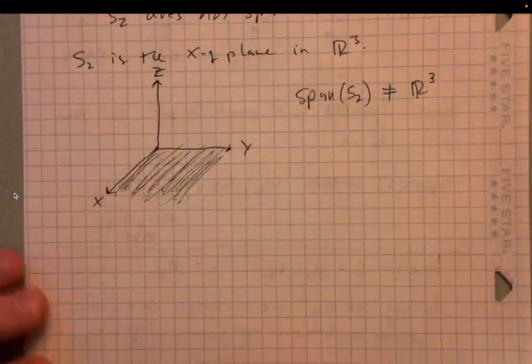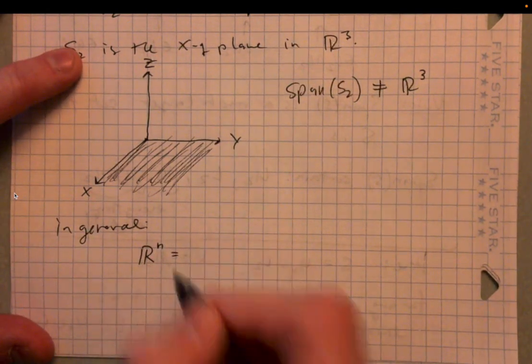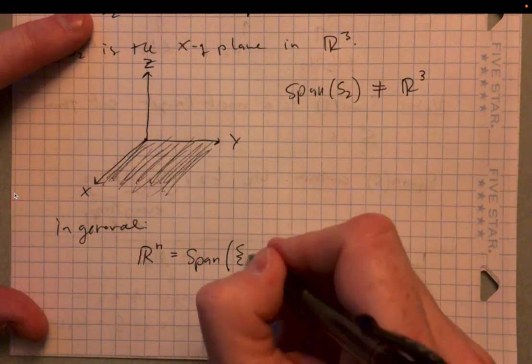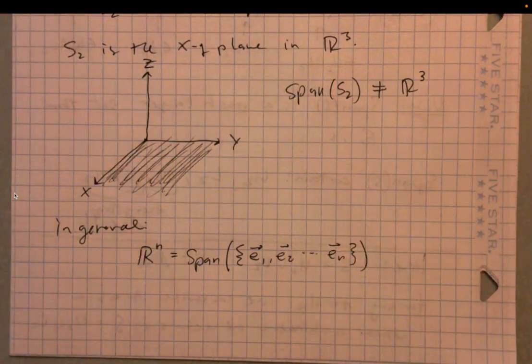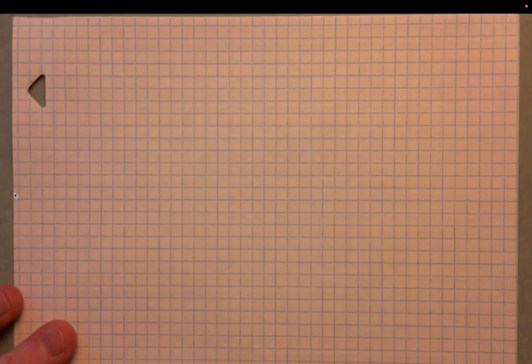In general, Rn is going to be equal to the span of N standard basis vectors E1, E2, ..., En. If I take these N vectors, the span of those N vectors is naturally going to equal Rn. We just saw two examples of that. So we've defined span and looked at examples of how the span fits into a larger vector space. Now let's jump into the big theorem of the section.